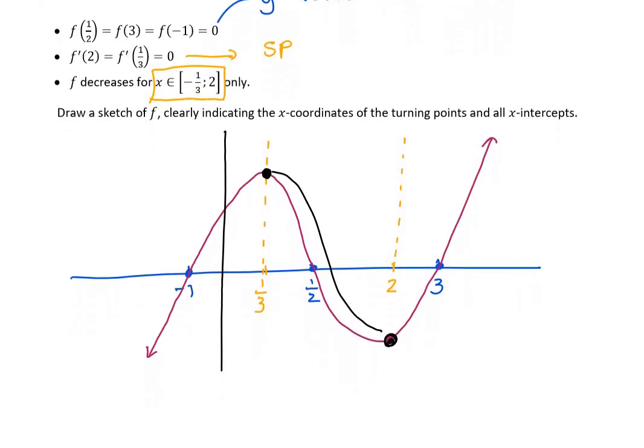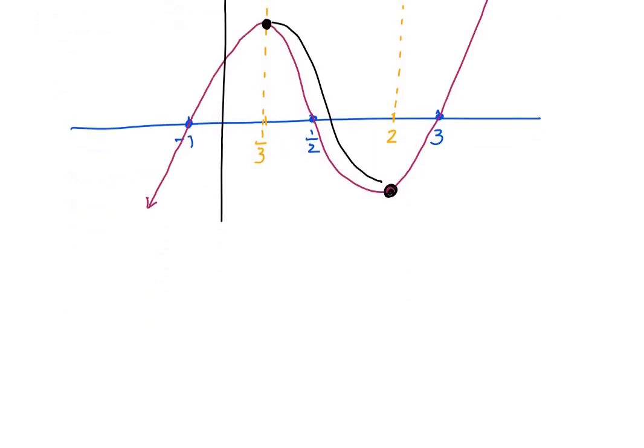That kind of ends our section on graph interpretation. So what you need to now do from the textbook is exercise 9.3 on page 224. I've listed five of the most applicable questions for us there. The answers are in the back of the textbook, so do mark them and then let me know any questions that you have. Okay, thanks girls.